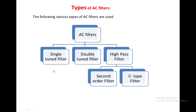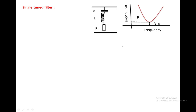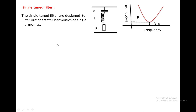First we are going to see the single tuned filter. The circuit diagram consists of a capacitor, inductor, and resistance connected in series. Looking at the variation of impedance versus frequency, at certain frequencies the impedance is high and at one particular frequency the impedance is low. We tune this filter such that the frequency of low impedance equals the order of the harmonic to be filtered, so those harmonic frequencies are bypassed. It is generally used to filter out a single characteristic harmonic.